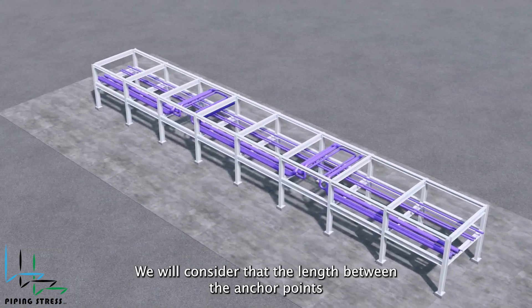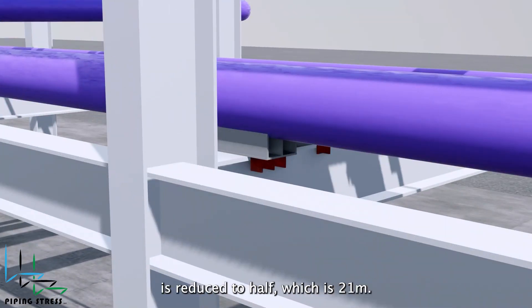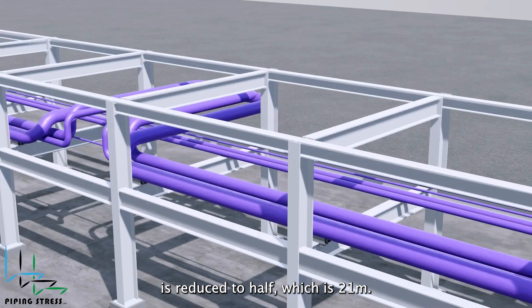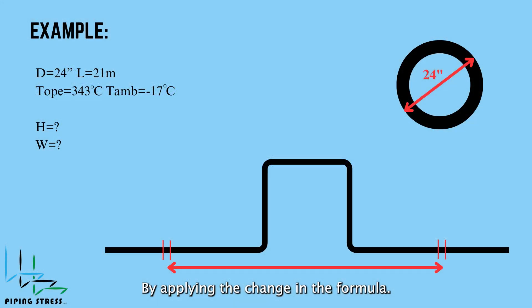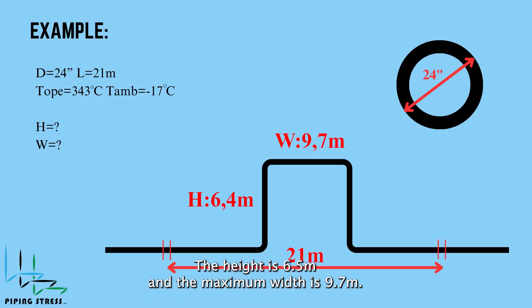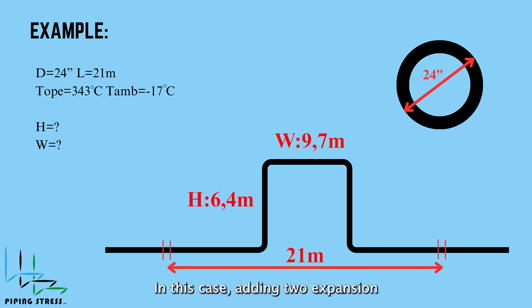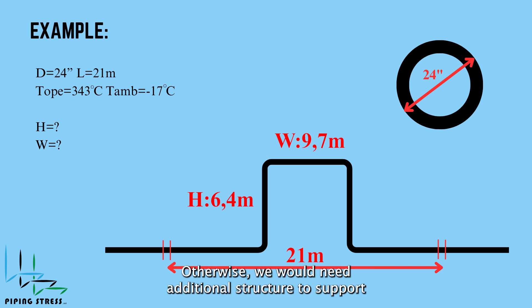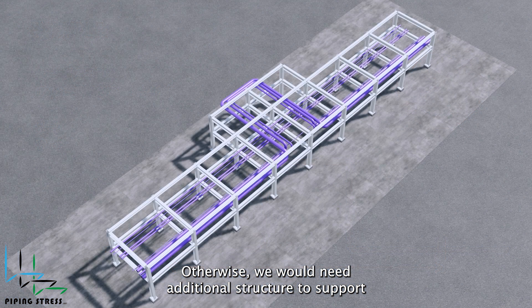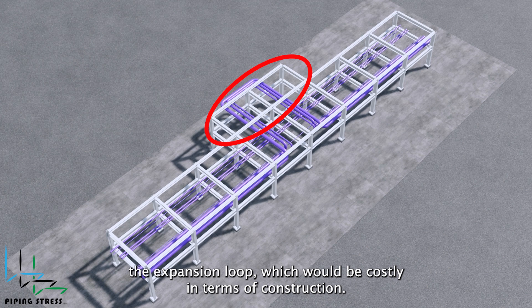We will consider that the length between the anchor points is reduced to half, which is 21 meters. By applying this change in the formula, the height is 6.5 meters and the maximum width is 9.7 meters. In this case, adding two expansion loops will suffice for a 6-meter wide pipe rack. Otherwise, we would need additional structure to support the expansion loop, which would be costly in terms of construction.